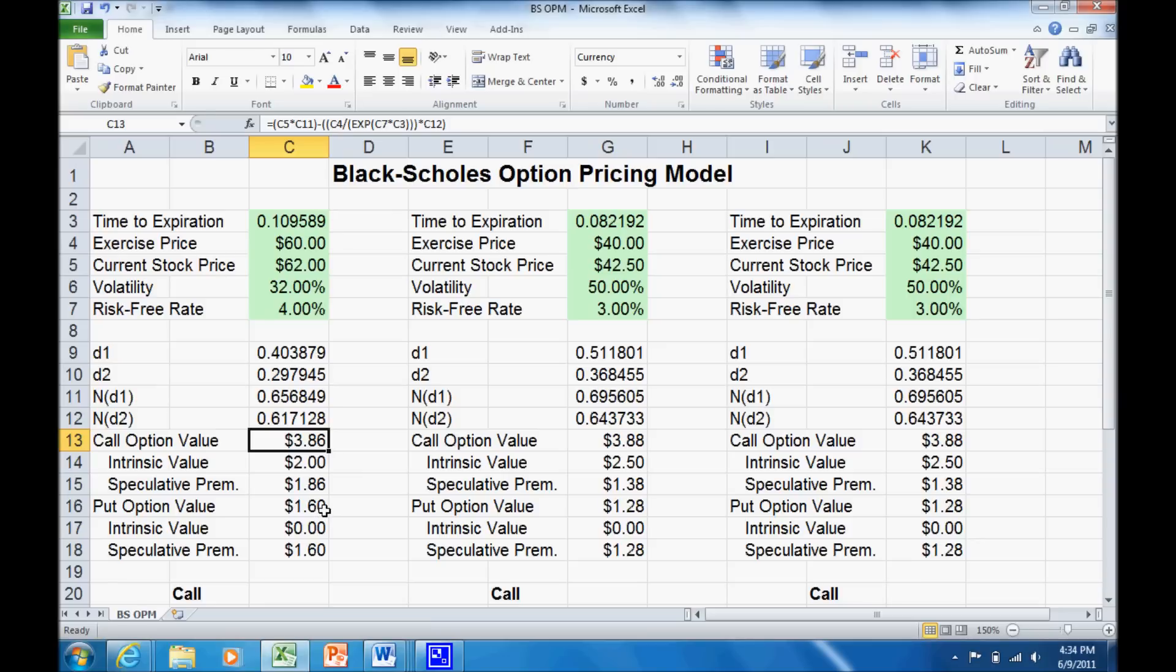The put option, which had a value of $1.60, has no intrinsic value. There's no value in being able to sell a $62 stock for $60, so that has no intrinsic value. The entire value of the option is speculative premium.